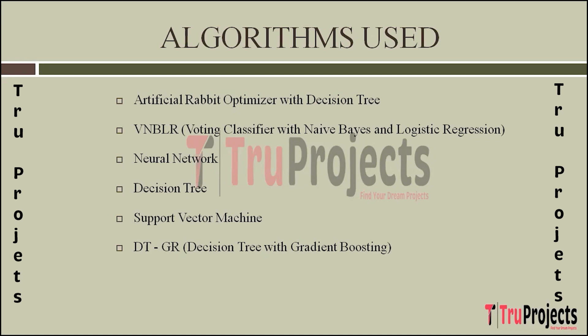The next algorithm is Decision Tree with Gradient Boosting. This involves enhancing a Decision Tree through Gradient Boosting, which builds trees sequentially, correcting errors of previous trees. It improves Decision Tree accuracy by focusing on areas where the initial tree performed poorly. This iterative approach enhances the overall model's predictive power for heart disease detection. Finally, Naive Bayes is a probabilistic algorithm based on Bayes' theorem. It assumes features are independent, simplifying calculations, and is computationally efficient and suitable for datasets with a large number of features.